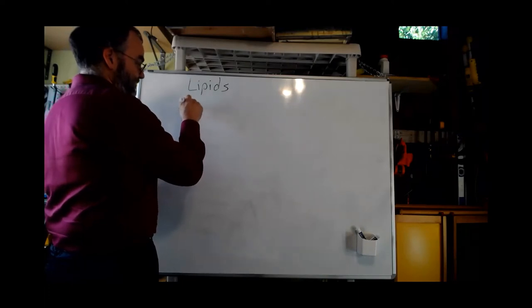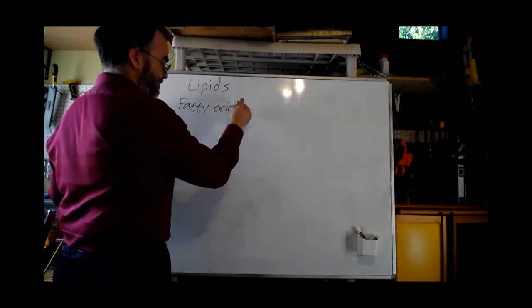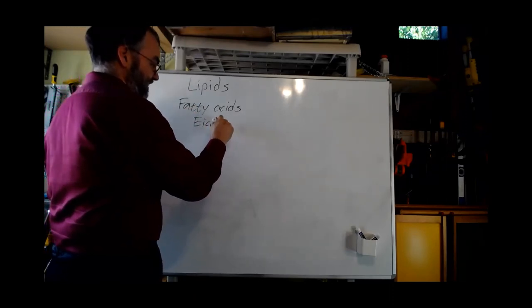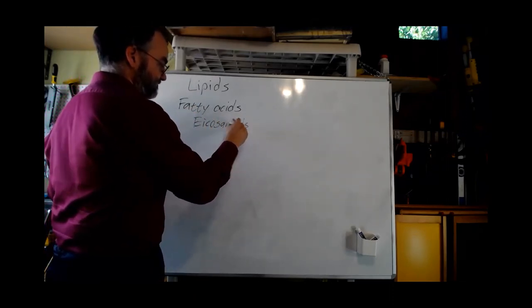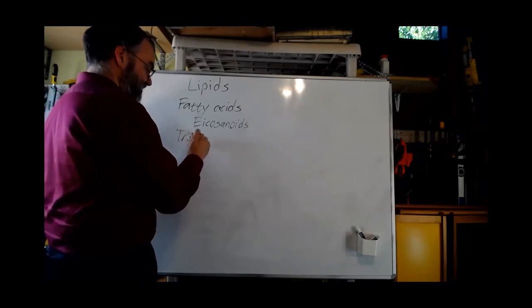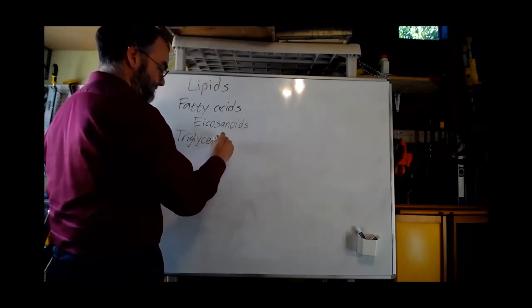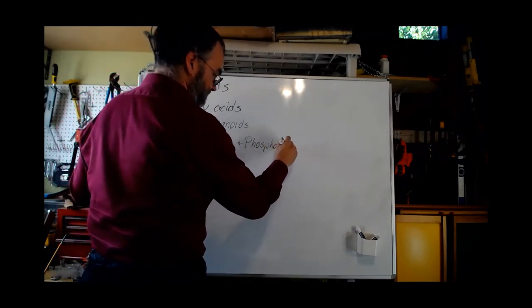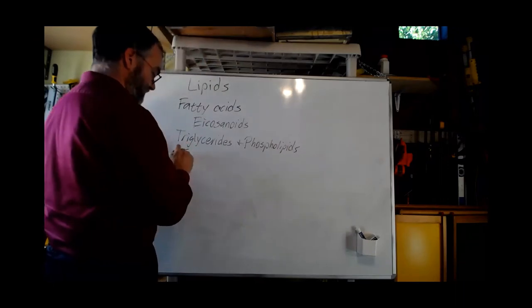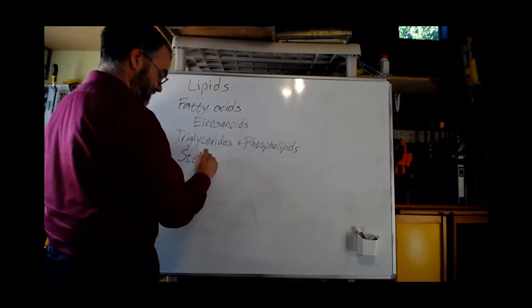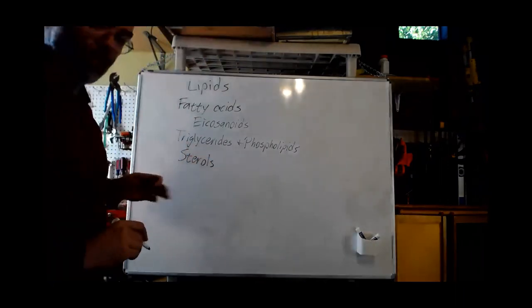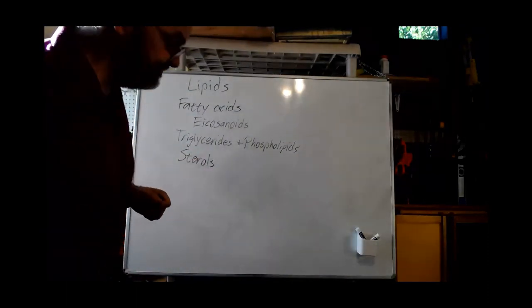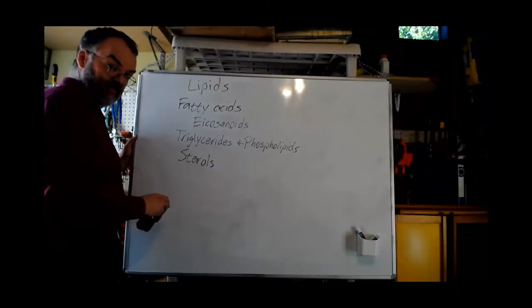So we're going to talk about several kinds of lipids. We're going to talk about fatty acids and a modification of fatty acids called eicosanoids. We'll talk about triglycerides and phospholipids. And we'll talk about sterols. So, let's get into fatty acids. I'll give you a moment in case you want to take note of that.